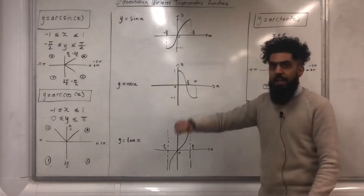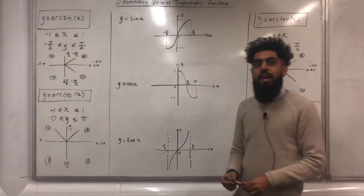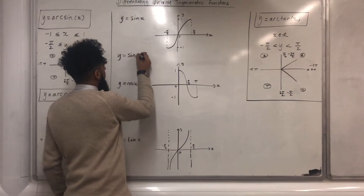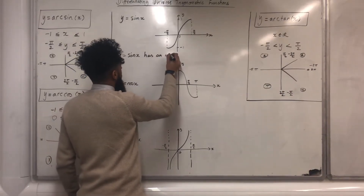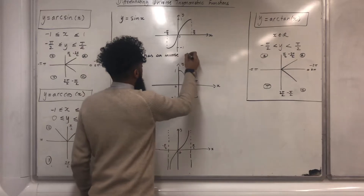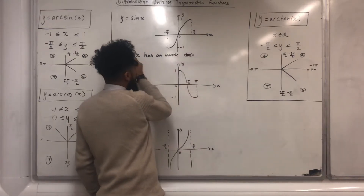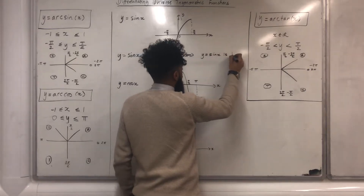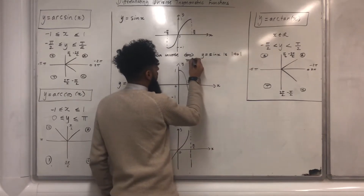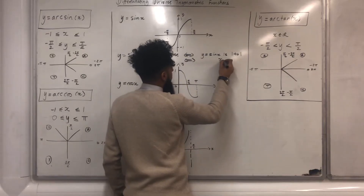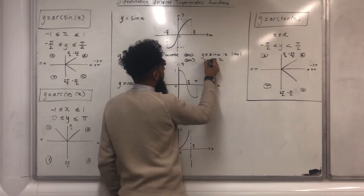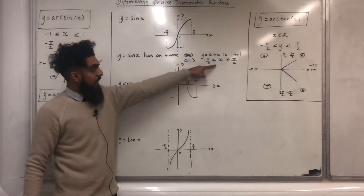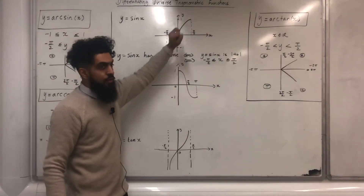Let's have a look at y equals sine x. Now y equals sine x has an inverse if and only if y equals sine x is one to one, if and only if x is more than or equal to minus pi over 2 but less than or equal to pi over 2. With this restriction we can sketch the graph and see that it is one to one.